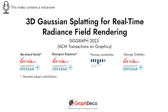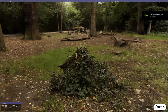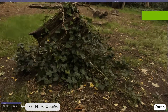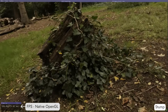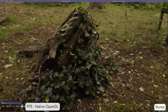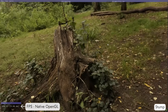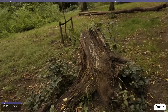This is a short video presentation of 3D Gaussian Splatting for real-time radiance field rendering. We propose to use 3D Gaussians as a new representation for radiance fields. We show that 3D Gaussians preserve desirable properties of continuous volumetric radiance fields, while avoiding unnecessary computation in empty space.